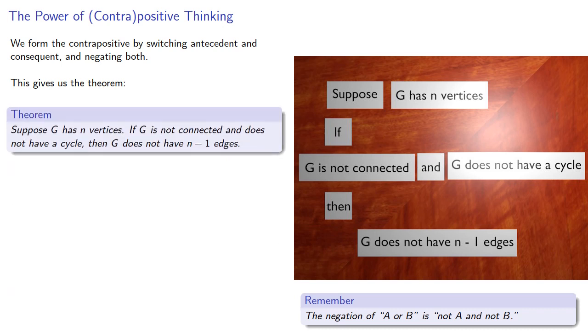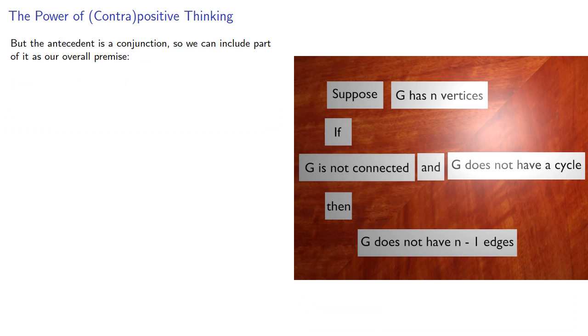And the thing to remember is we obtained this additional theorem from the contrapositive, which is essentially a freebie. But notice the antecedent is a conjunction, so we can include part of it as our overall premise. And so we might get...